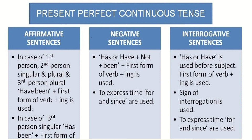When we have an affirmative sentence, then in the case of the first person, second person singular and plural, as well as the third person plural, we use 'have been' plus the first form of the verb plus '-ing'. In case there is a third person singular, then we use 'has been' plus the first form of the verb plus '-ing'.